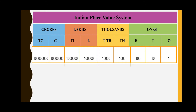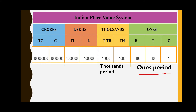If we observe: ones, tens, and hundreds are called the ones period; thousands and ten thousands are called the thousands period; lakhs and ten lakhs are called the lakhs period; and crores and ten crores are called the crores period. These are the periods we have in our Indian system.